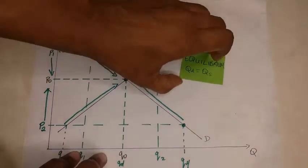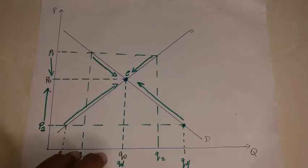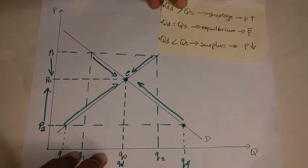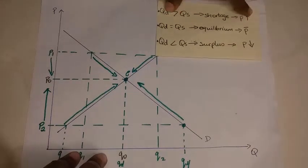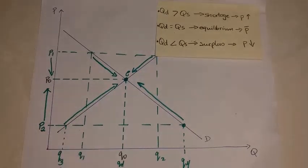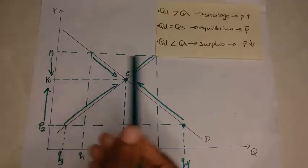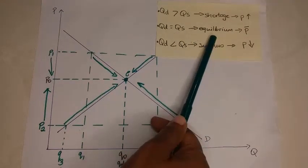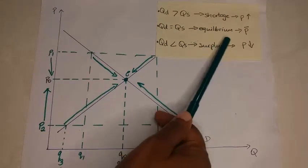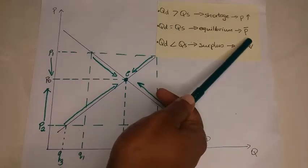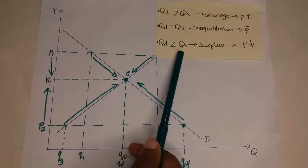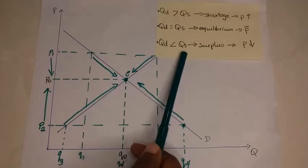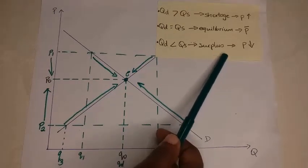To summarize: in cases where quantity demanded is greater than quantity supplied, we have a shortage, and a shortage leads to price increasing. When quantity demanded is equal to quantity supplied, we have an equilibrium position and price remains constant. Where quantity demanded is less than quantity supplied, we have a surplus, and so price would fall.